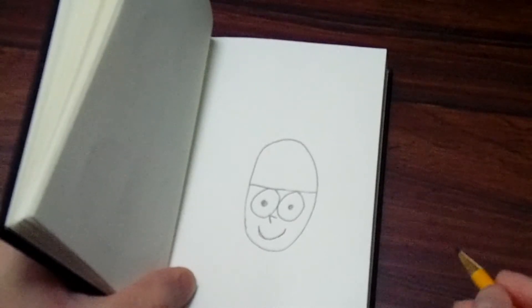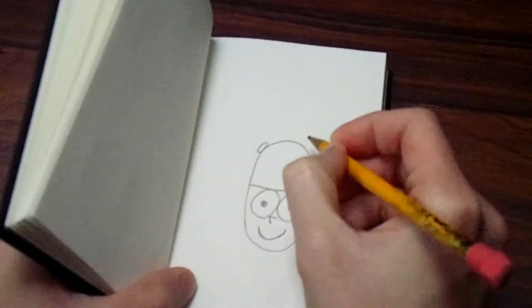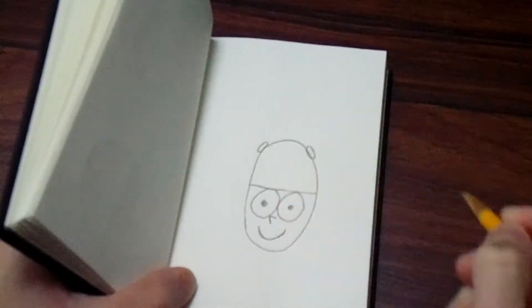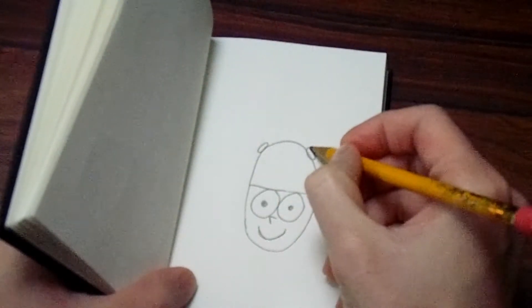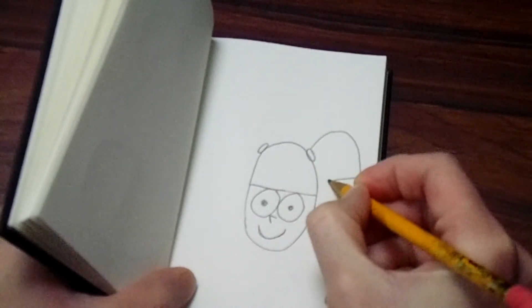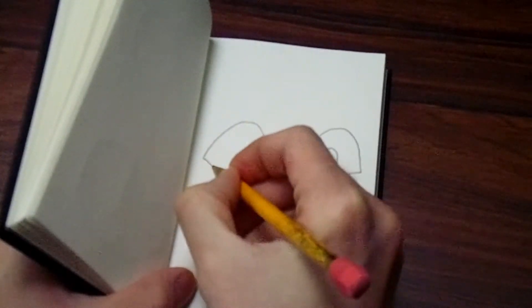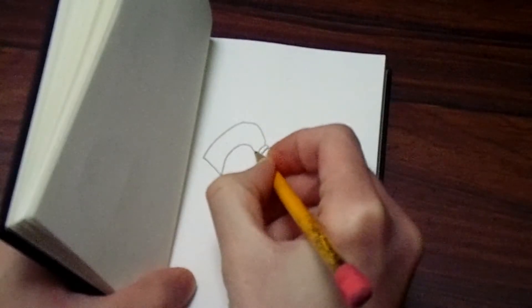And then we're going to put her hair into pigtails. So we're going to put a little oval, which is like a squashed circle, on either side of her head. And then our pigtails are going to be a curve out, straight line, and then curve back to there. Curve out, straight line, curve back to there.